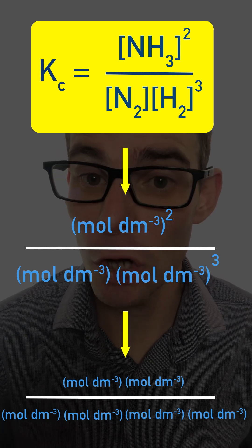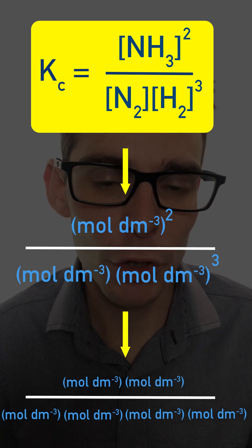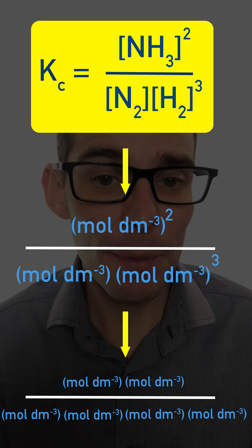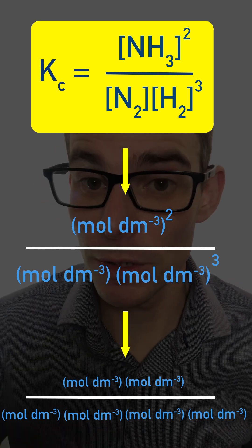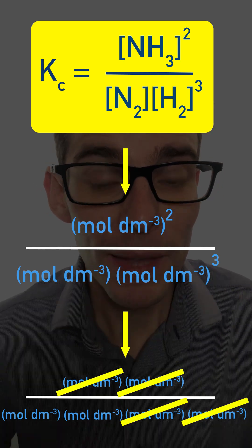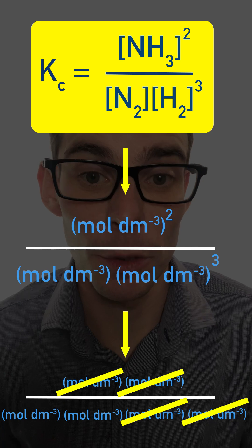Now cancel out what's on the top from what's on the bottom. So we've got two mole per decimeter cubed at the top and we've got four at the bottom. The two at the top are going to cancel out two at the bottom, leaving none at the top and two at the bottom.